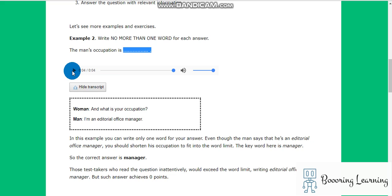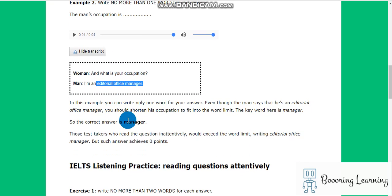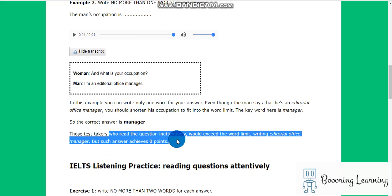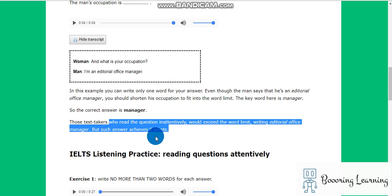So you can't write editorial office manager. You can only write one word, so you can only write manager. Those test takers who read the question inattentively will exceed the word limit writing editorial office manager, but such an answer achieves zero points, so it is wrong.